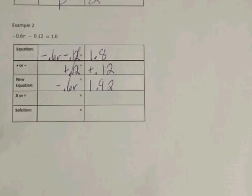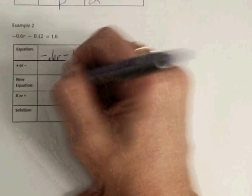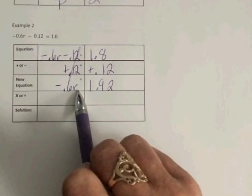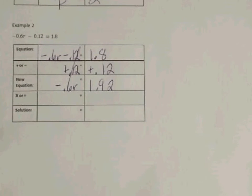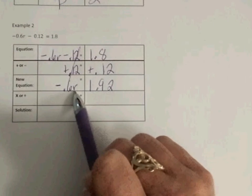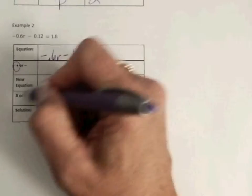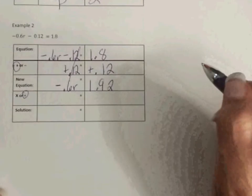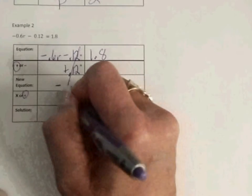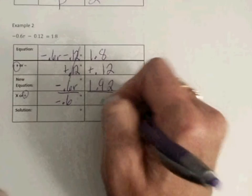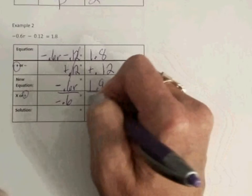When we talked about when there is a number that is attached to the variable, we call that a coefficient. When the coefficient is attached like this, that means they multiplied. Opposite operations, if they multiplied, we are going to divide. We want to get rid of this negative 2, so that negative goes with it as well. So, we're going to divide both sides by negative 6 tenths.